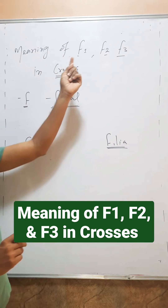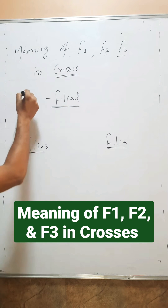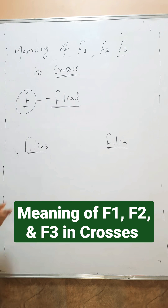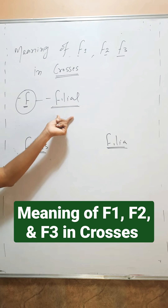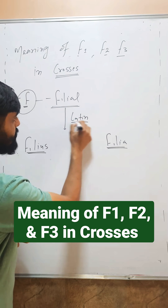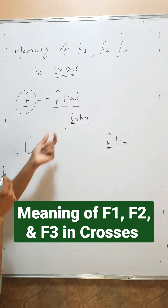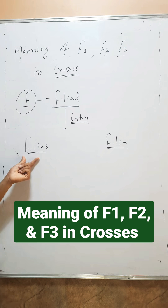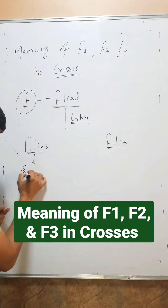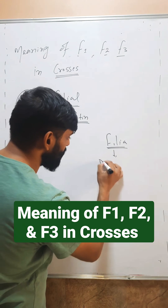What is the meaning of F1, F2, F3 in crosses? So this 'F' here stands for filial. Filial is a Latin word, which is a modification of 'philus' and 'philia'. Philus means son and philia means daughter.